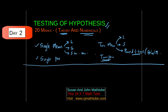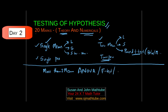Then two proportion. And finally, you study more than two means — to test the equality of more than two means. That is called ANOVA, or ANOVA test, or F-test, or analysis of variance.